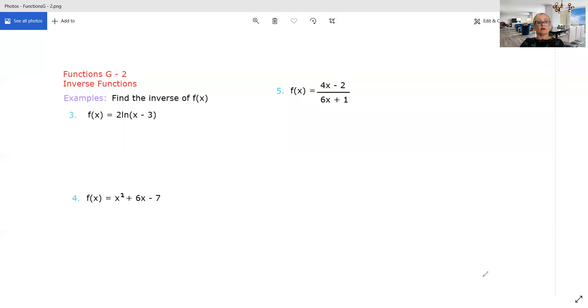So just bear in mind, ln means natural log. I'd be inclined to actually change that into log to base e here just to make our work ahead of us a little bit easier. So we've got y equals 2 log to base e of x minus 3.